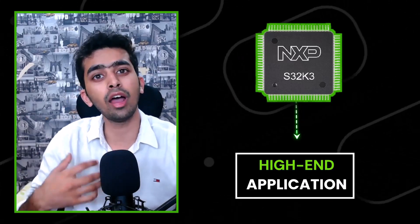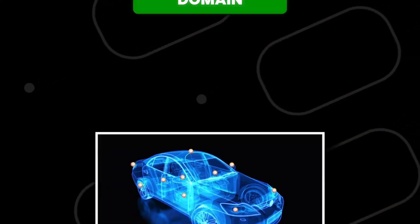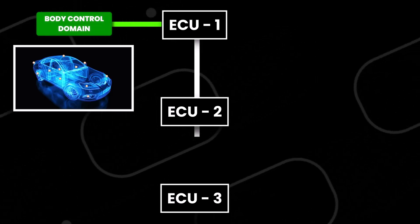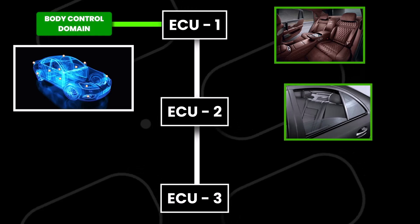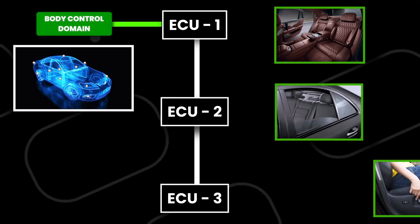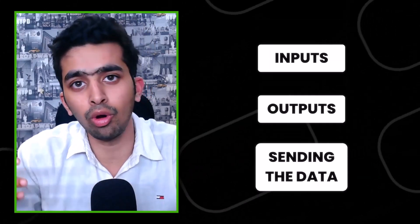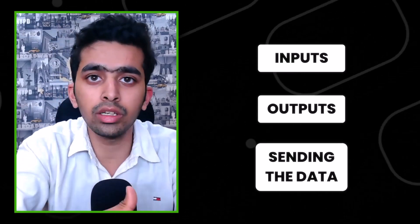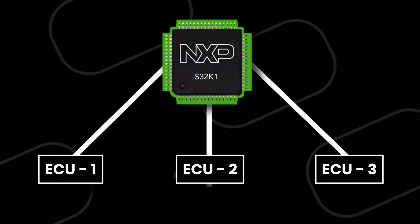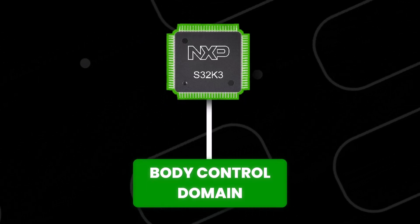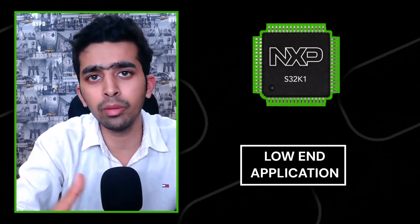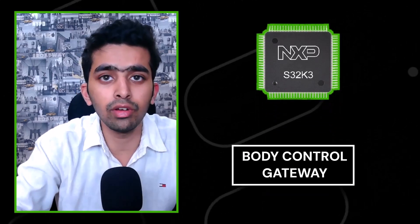S32K1 can be used for less computational, low-end applications, while S32K3 is for applications needing heavy computation and many I/Os. For example, in a body control domain you might have one ECU controlling interior lighting, one controlling power windows, and one controlling seat adjustment — these simple single I/O ECU nodes can be built with S32K1. The main body control gateway handling all inputs, outputs, and data routing to other ECUs would use S32K3.